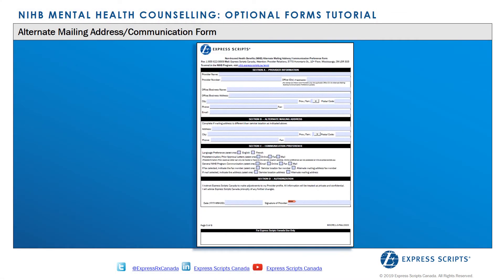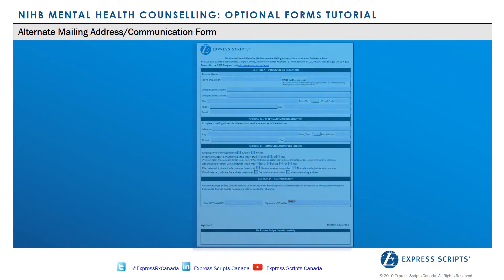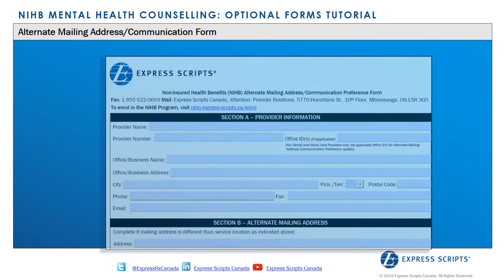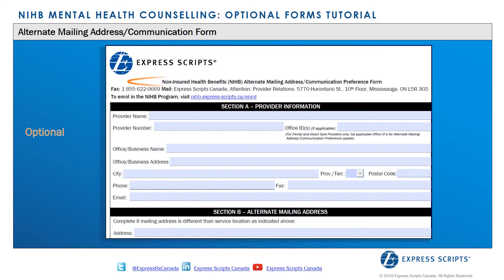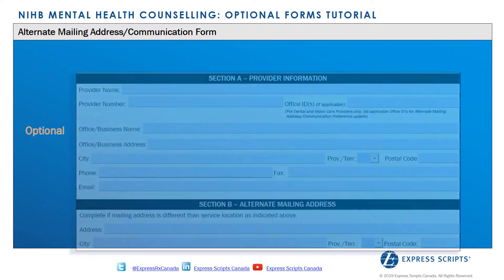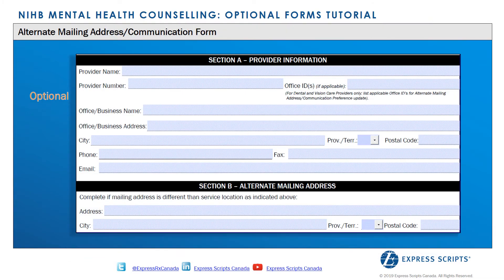This is the Alternate Mailing Address Communication Preference form. This form is optional. If the provider is enrolling one location using the Mental Health Counseling Billing Agreement, it is not necessary to complete Section A. However, if the provider is enrolling multiple business locations, then Section A must be completed, indicating which location this form applies to.